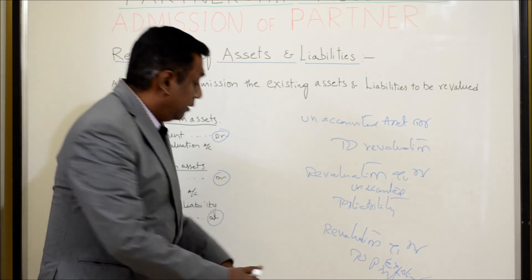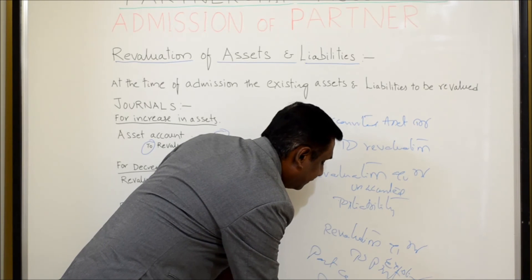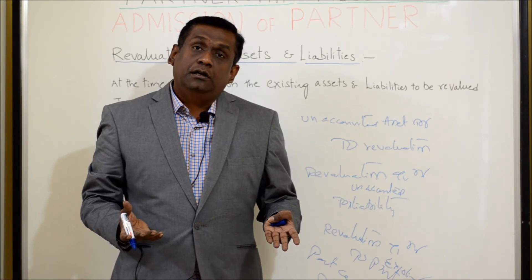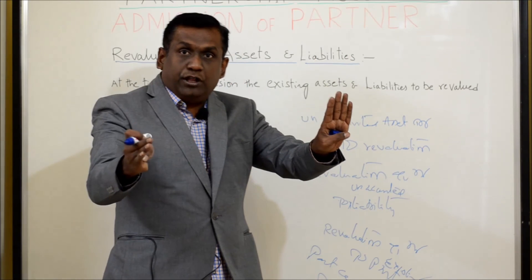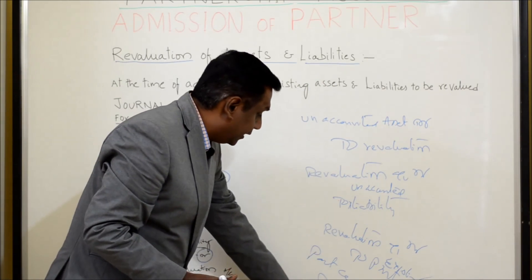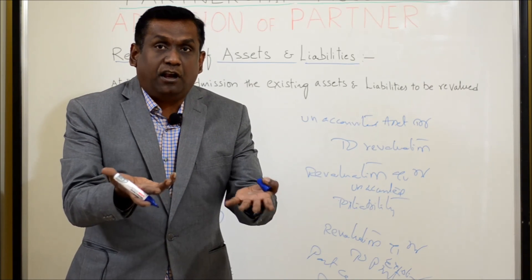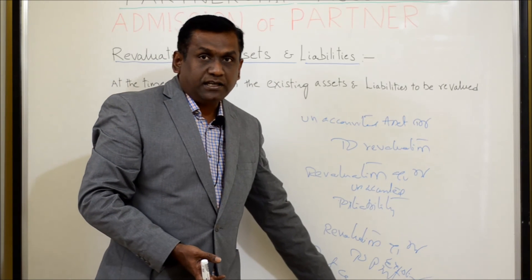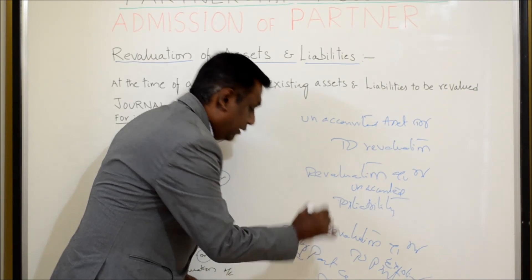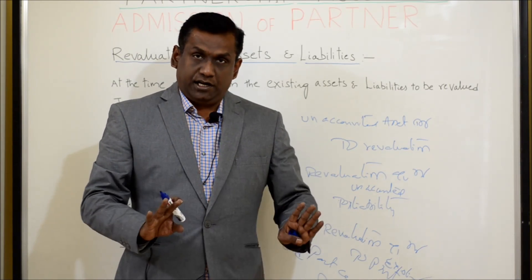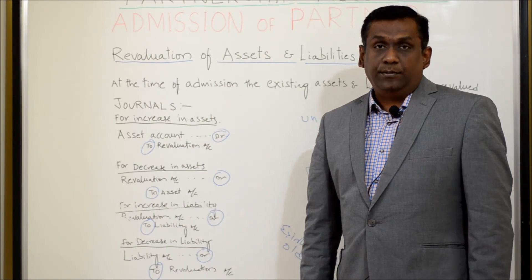When there is a loss, the revaluation account would be showing a debit balance. That debit has to be distributed to the partners — to distribute the debit, you credit the revaluation account. Obviously, the partners' capital will be reduced to the extent of the loss, so you debit the existing partners' capital account and credit the revaluation account. These are the important entries we prepare when we do the revaluation of assets and liabilities. I hope you are clear.